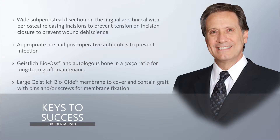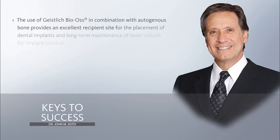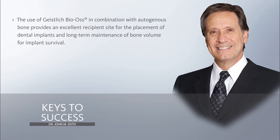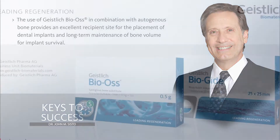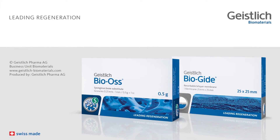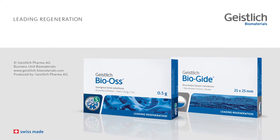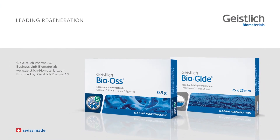A large Geistlich BioGuide 40 by 50 millimeter membrane to cover and contain the graft with pins and screws creates immobility and optimal healing. In conclusion, the use of Geistlich BioOss and BioGuide in conjunction with autogenous bone provides a graft system that consistently provides excellent bone for dental implant placement and long-term maintenance of bone volume. Thank you.